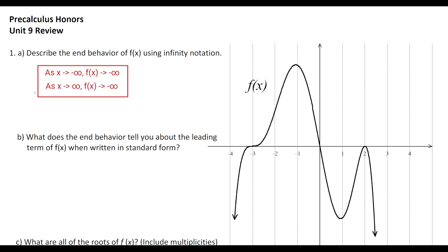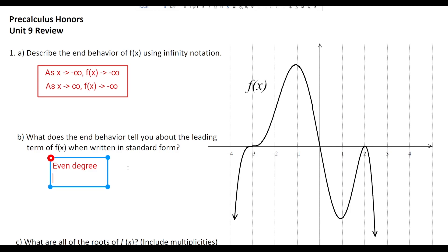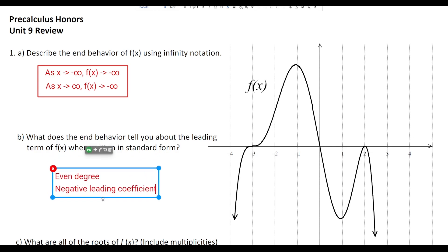Part b asks what the end behavior tells us about the leading term when written in standard form. The fact that it goes down to the left and down to the right tells us we have an even degree — something like 2, 4, 6, or 8 — and a negative leading coefficient. Those are the two things we can tell just from the end behavior.